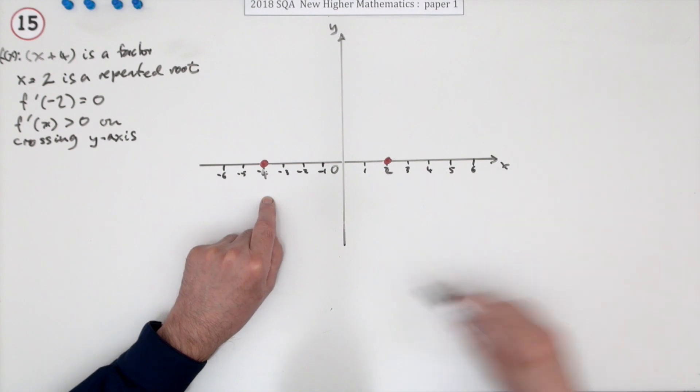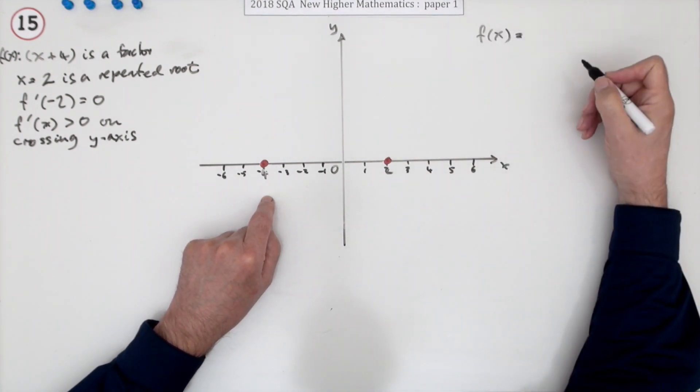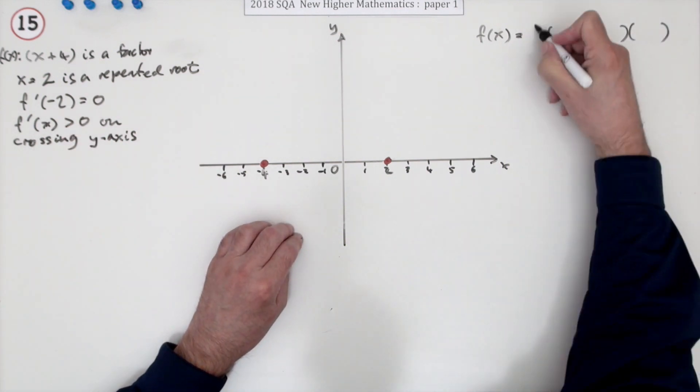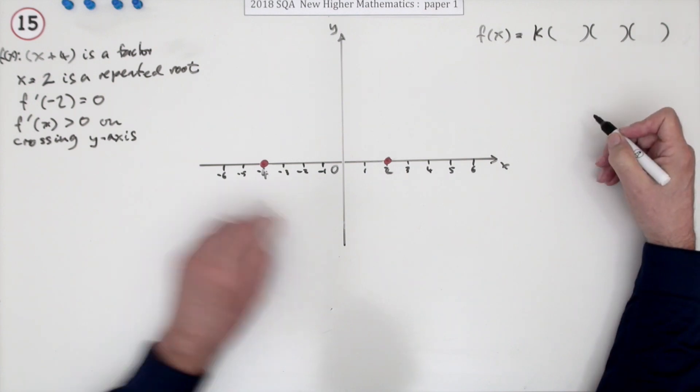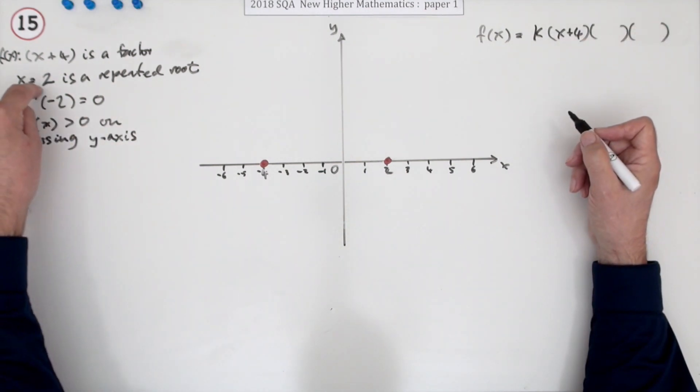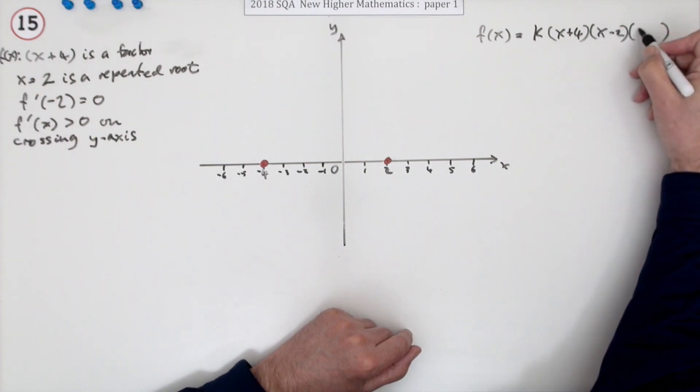Now, it says it's a cubic function, which means if it completely factorises, there should be three brackets. Might have been a common factor. I just told you one of the factors. You don't need to write anything down, of course. But by saying x equals 2 is a repeated root means the other two brackets give the same answer.